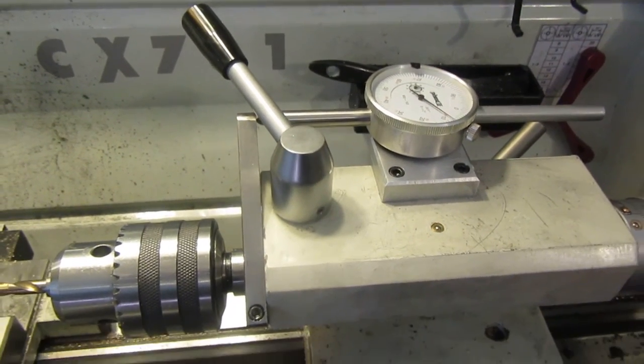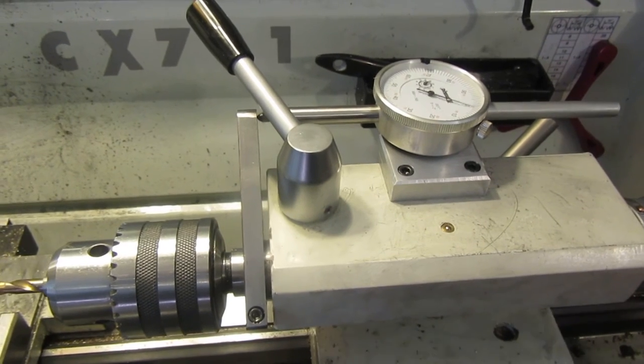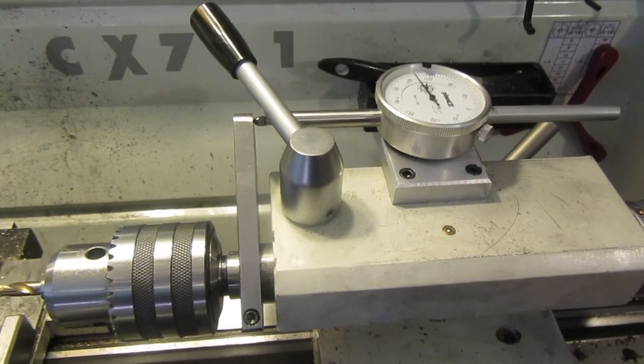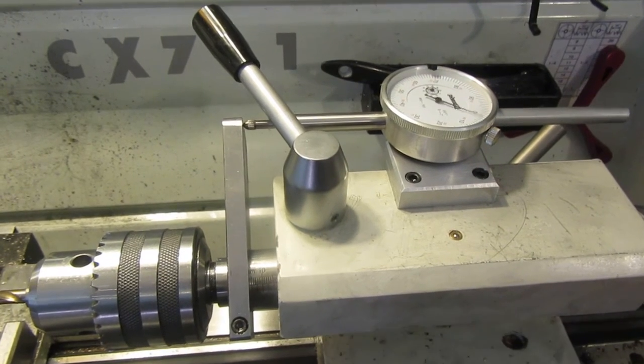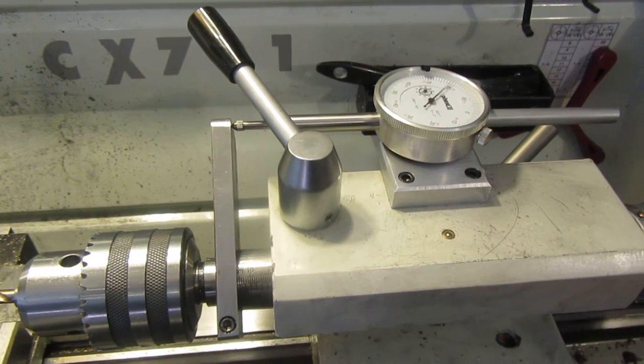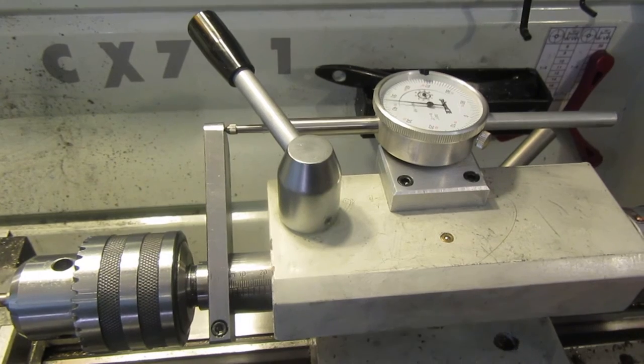And as I advance the tailstock quill, you see what's happening. I'm not pressing in on the tip of the dial indicator. I'm letting it out.